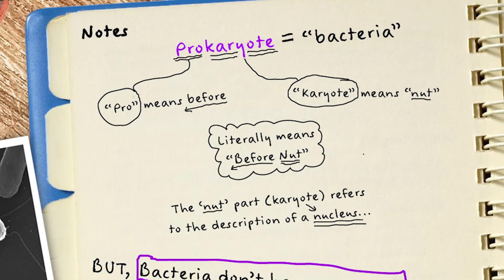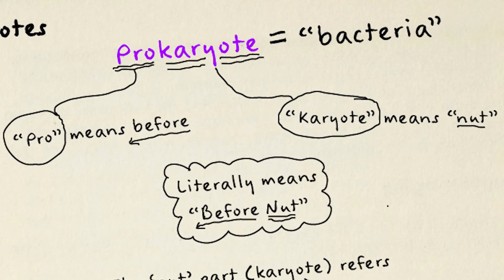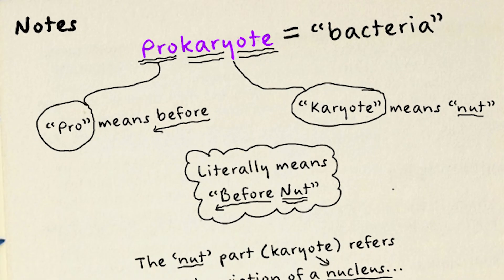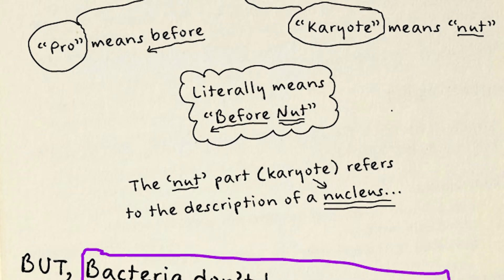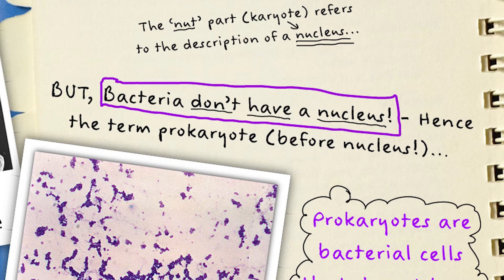When you see the term prokaryote you just need to read it as bacteria, since that's what all prokaryotes are — bacterial cells. The first part of the name, 'pro', means before, whilst the 'karyote' part means nut. So the word literally means 'before nut'. The 'karyote' part refers to the description of the nucleus within the cell. But bacteria don't have a nucleus, hence the term prokaryote — before nucleus.